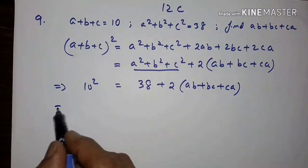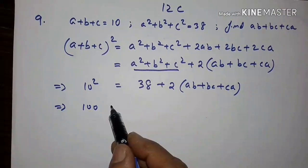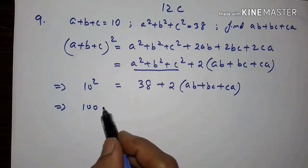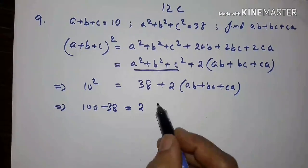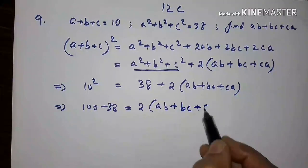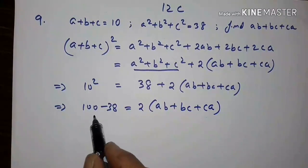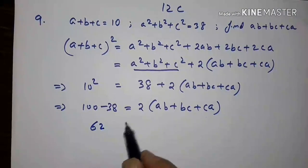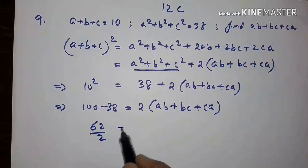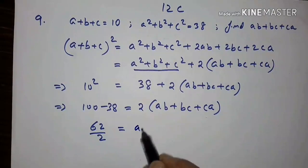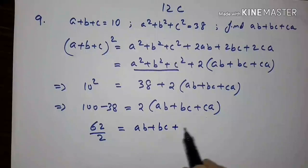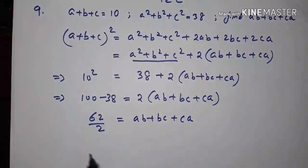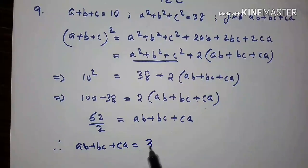10 squared is 100. So 100 minus 38 equals 2 into (ab plus bc plus ca). That gives 62 equals 2 into (ab plus bc plus ca). Dividing both sides by 2, we get 31. Therefore, ab plus bc plus ca is equal to 31.